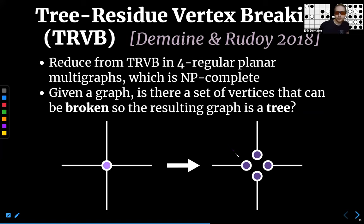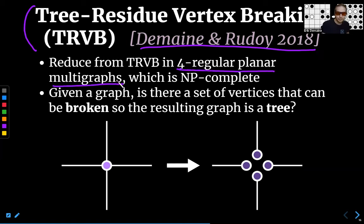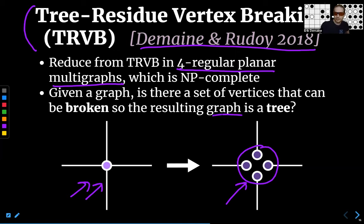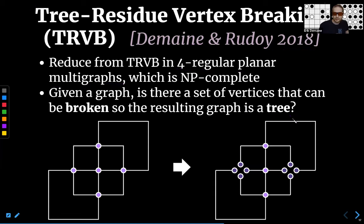Our reduction is from tree residue vertex breaking, or TRVB, introduced by two of the authors. In this problem, we're given a four-regular planar multi-graph where every vertex has degree four. For each vertex, we can either leave it alone or break it apart into four leaves — four vertices of degree one. Our goal is to make the graph into a tree: it must stay connected and become acyclic. Deciding whether this is possible is NP-complete. Here is an example of a four-regular planar multi-graph that has a solution: if you break two particular vertices, you end up with a tree.